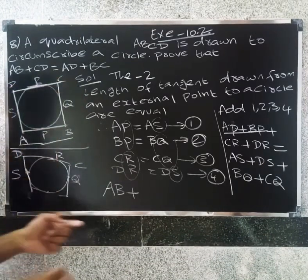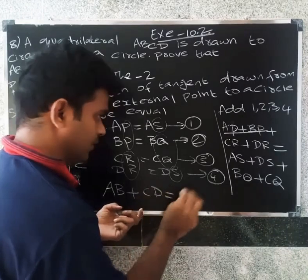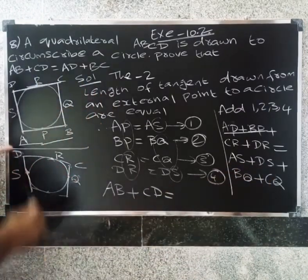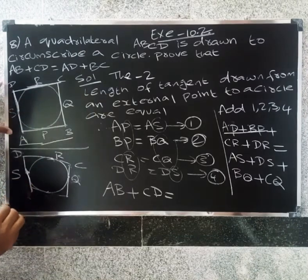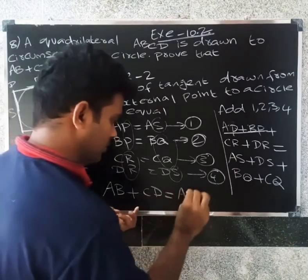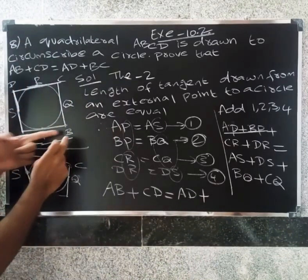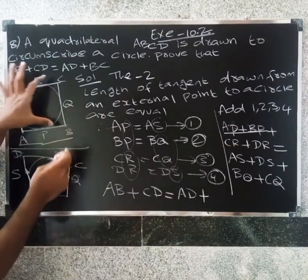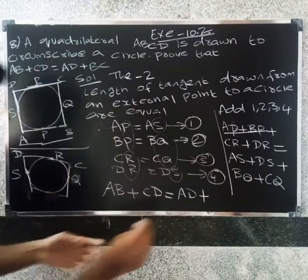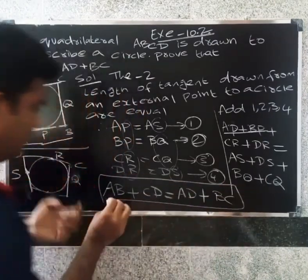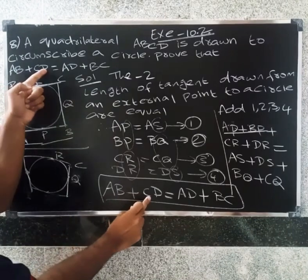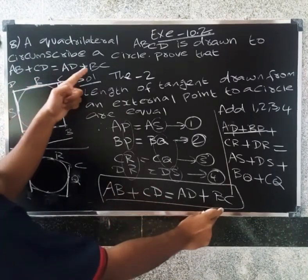AS + DS equals AD, and BQ + CQ equals BC. Therefore, AB + CD = AD + BC.